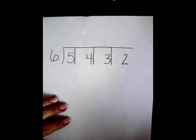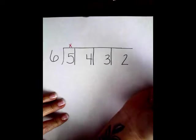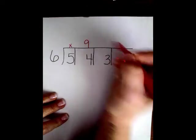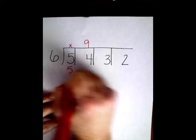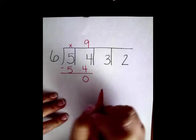6 doesn't go into 5. I'm going to put a placeholder. 6 is going to go into 54. Well, that's 9 times. 9 times 6 is 54. I get nothing left over. That's perfect.